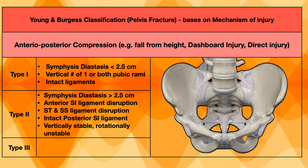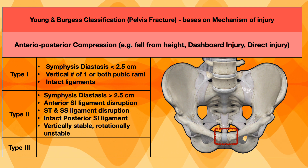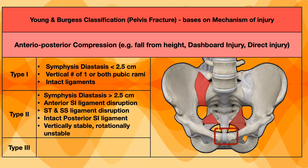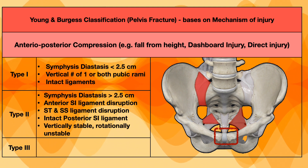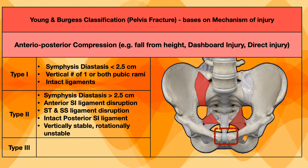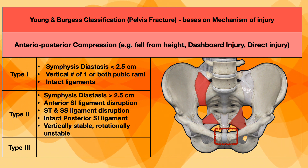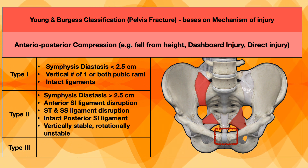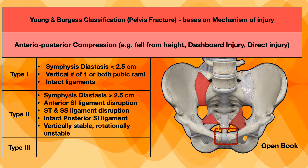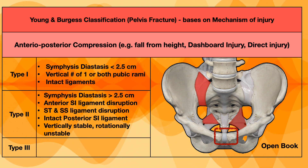In anteroposterior compression type 2, the symphysis diastasis will be more than 2.5 cm. The anterior sacroiliac ligament will be disrupted, and the sacrotuberous and sacrospinous ligaments will also be disrupted. However, the posterior spinoiliac ligaments remain intact. Because the posterior sacroiliac ligaments are intact, weight can still pass from superior to inferior, so the pelvis will be vertically stable but rotationally unstable. Because the pubic symphysis has opened and the ligaments are broken, the pelvis opens like a book — this type is called an open book pelvis.